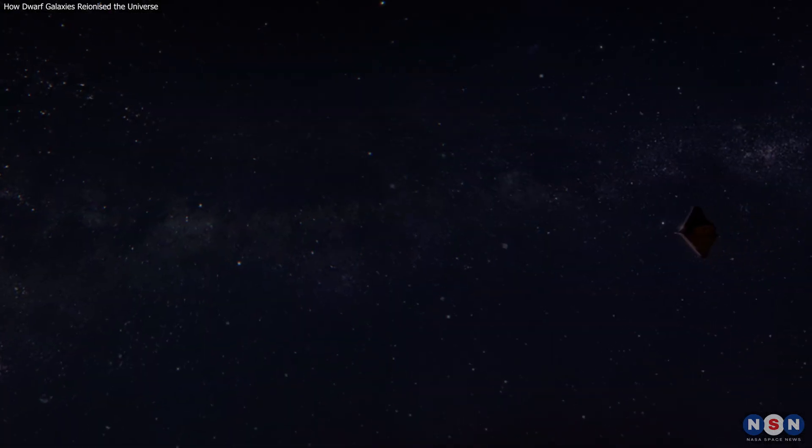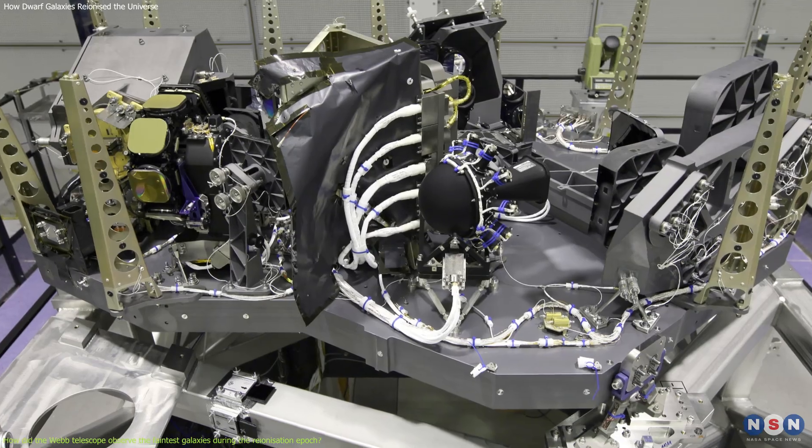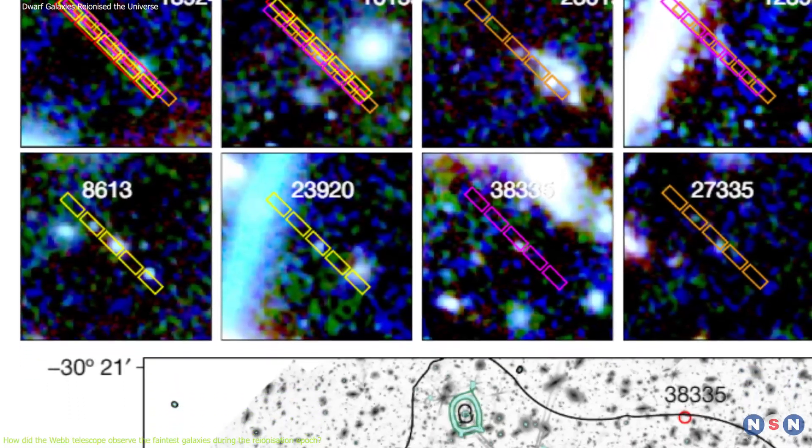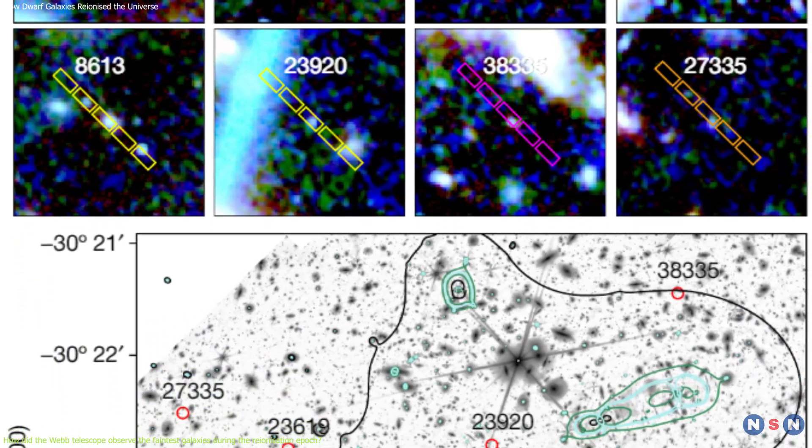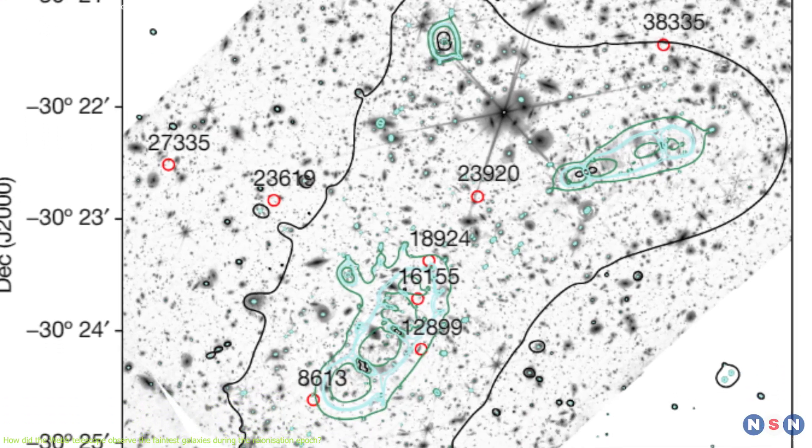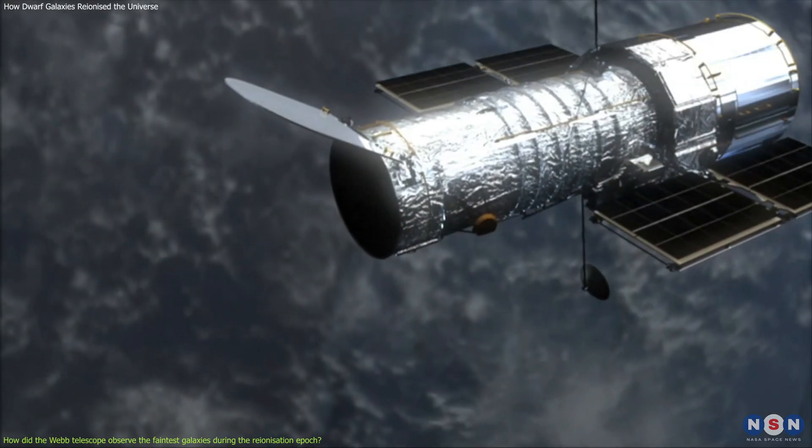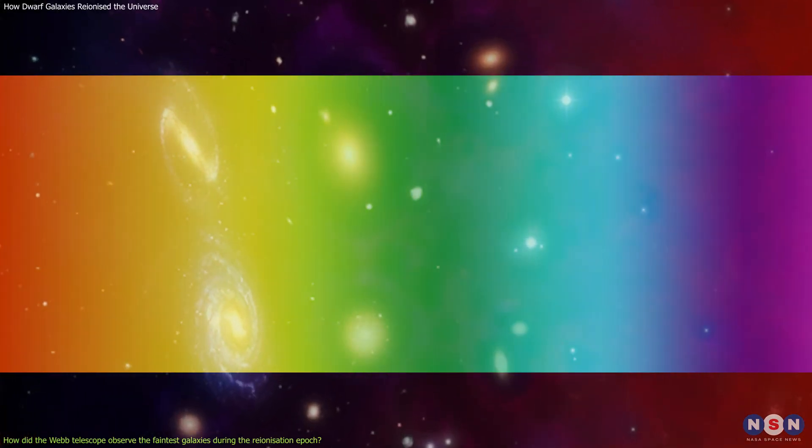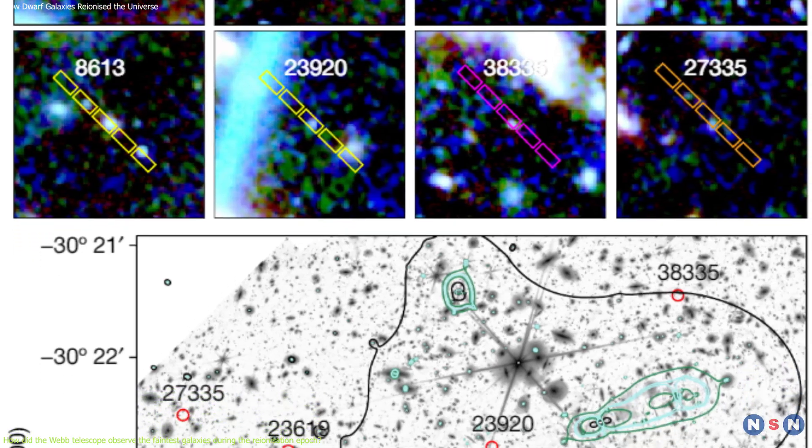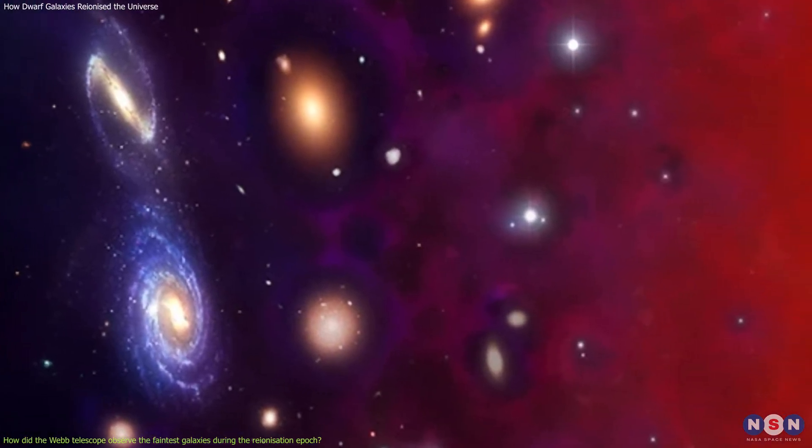Webb is designed to peer into the deepest and darkest corners of the universe. Using its near-infrared spectrograph, or NIRSpec, Webb was able to measure the spectra of more than 100 ultra-faint galaxies that existed during the reionization epoch, some of which are 10,000 times fainter than what the Hubble telescope could see. By analyzing the spectra, the scientists were able to estimate how much ultraviolet light these galaxies emitted, and how much of that light escaped into the intergalactic medium.